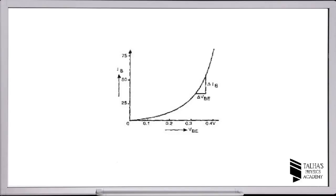For a germanium transistor, the breakaway point is in the region of 0.1 to 0.2 volt. It is clear from the graph that the graph drawn is for a germanium transistor. Now we will study the output characteristics. In order to study output characteristics, the input is kept constant and the output voltage and current are varied and their relation is studied. We make the base current constant with the help of potentiometer R1, then vary the collector-emitter voltage step by step.